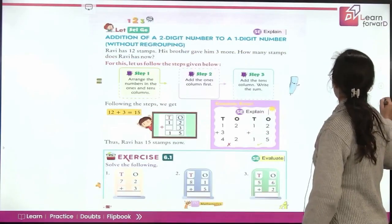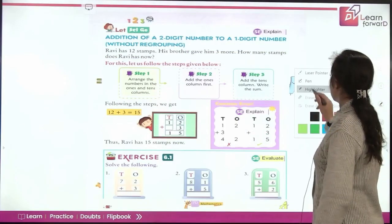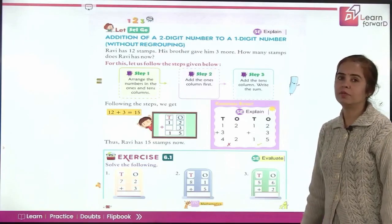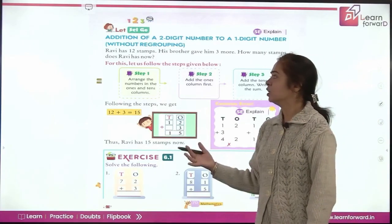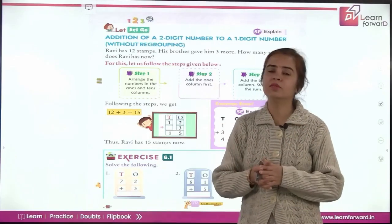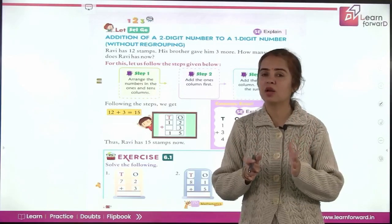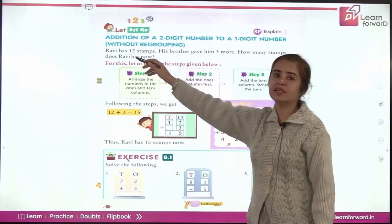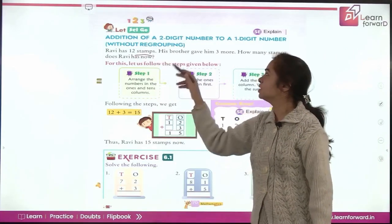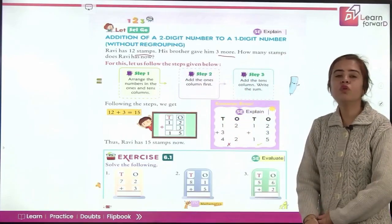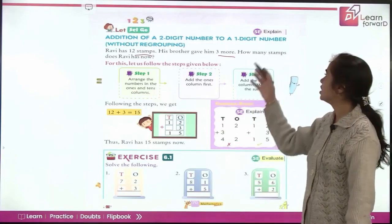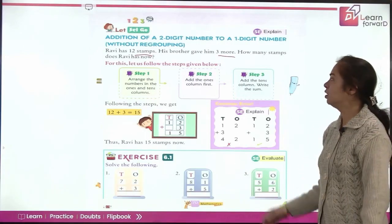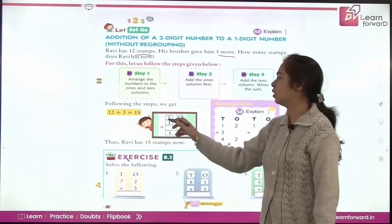Now moving ahead, we will be doing addition and subtraction of two-digit numbers. So this is addition of a two-digit number to a one-digit number. Adding means going forward. So what you have to do? First thing is we have already learned how to write numbers in columns, the tens columns and the ones column. So always write the columns at the top first. So if you have to add two numbers, let us read it out. Ravi has 12 stamps. His brother gave him three more. So what is more? More means addition. Yes. How many stamps does Ravi have now? So how many stamps does he have? We will add you already told.